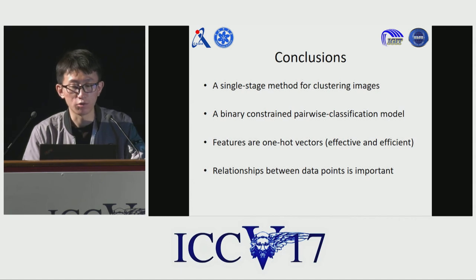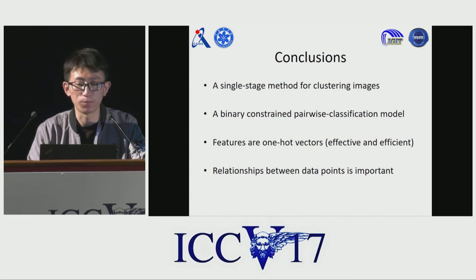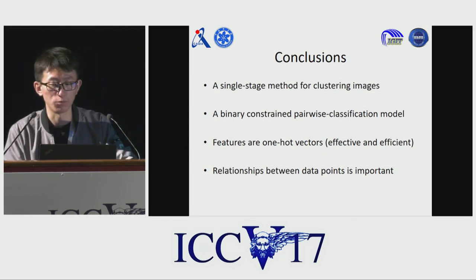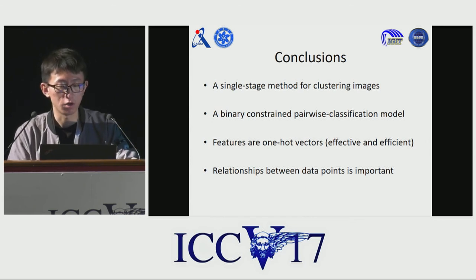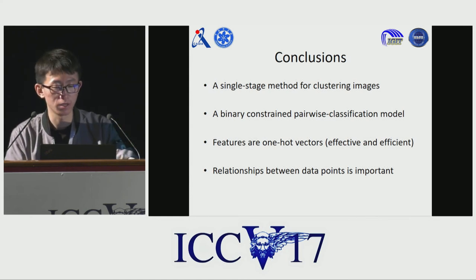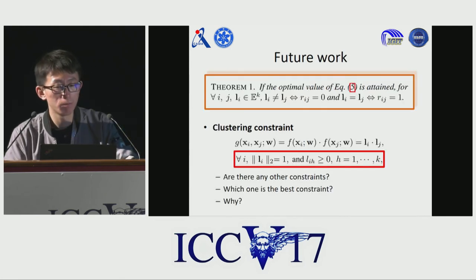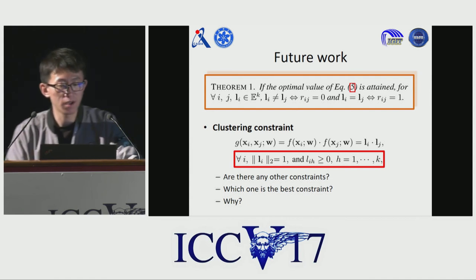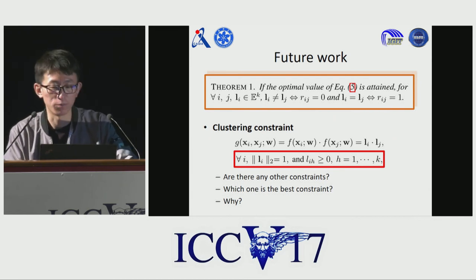In summary, we develop a binary pairwise classification framework for clustering analysis, which benefits feature learning in an unsupervised manner. Specifically, the label features tend to be one-hot vectors, meaning that DAC can learn more effective and efficient features of the data. This work also demonstrates that the pairwise relationships between data points are important for clustering. In our model, the label features meet the clustering constraints. But are there any other constraints, and which is the best one and why? We will explore this problem in future work.